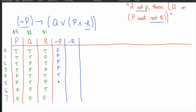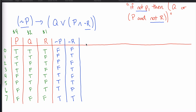Continuing: F in the P column means T in the not-P column. For not-R, reference the R column and write the opposite — T means write F, F means write T. It's worth noting that if these columns are written in the correct order, patterns emerge: four T's then four F's in P becomes four F's then four T's in not-P, and the alternating T-F pattern in R becomes the opposite alternating pattern in not-R.